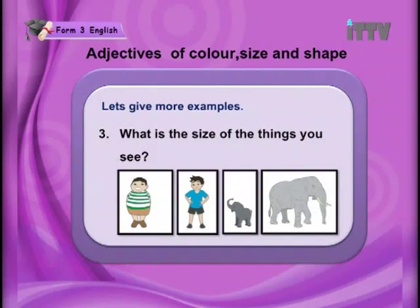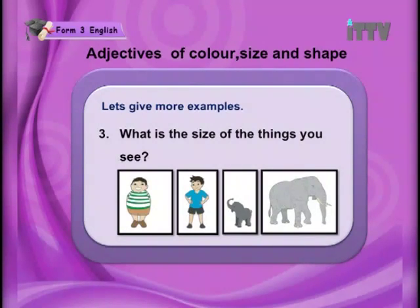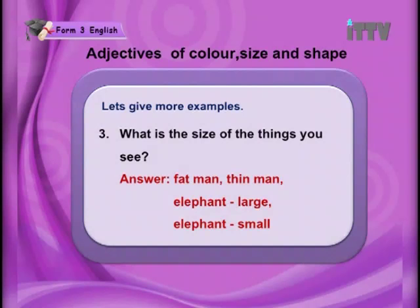What is the size of the things you see? Look at the pictures carefully and use the correct adjectives to qualify these nouns. The answers: fat man, thin man. The elephant — you have a large elephant and you also have a small elephant. So the adjectives give you a clearer picture about the noun.